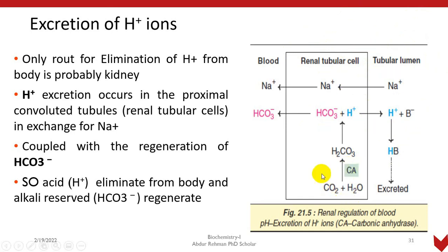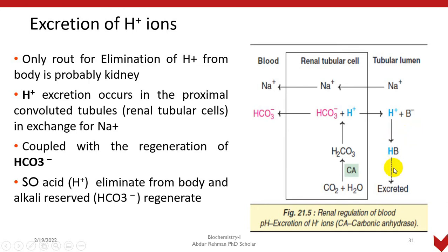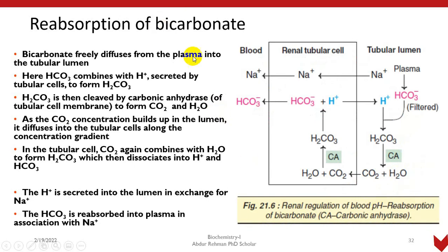Inside the renal tubule, carbon dioxide and water combine with the help of carbonic anhydrase to form carbonic acid. Carbonic acid then splits into hydrogen ions and bicarbonate ions. Bicarbonate is alkaline — the alkali reserves are not allowed to be excreted, so they are reabsorbed along with sodium and regenerated back into the blood plasma. While excess hydrogen ions are excreted down the concentration gradient into the tubular lumen, where they combine with a base and are excreted in the urine, making urine pH slightly acidic at around 6.4.